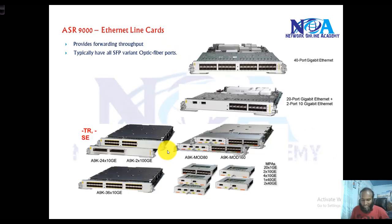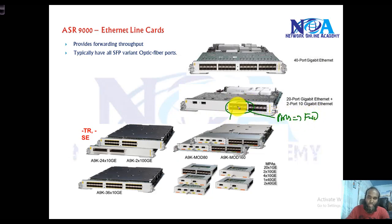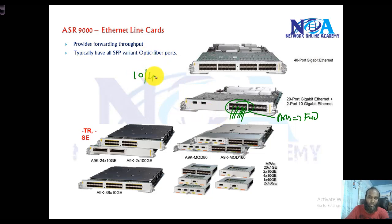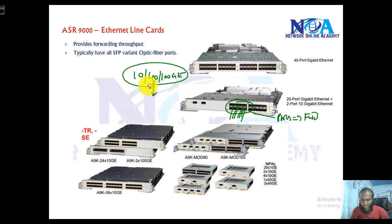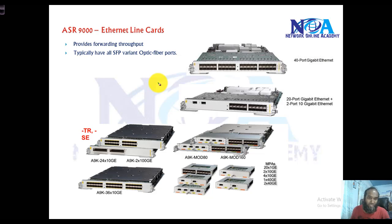Next are the ethernet line cards. These are the ports that do the actual forwarding — where you actually connect devices or customers. There are different models of ethernet line cards supported, mostly supporting up to 10 Gig, 40 Gig, and even 100 Gig ethernet ports on some platforms. You should check the Cisco website for the different models, specifications, and compatibility with specific Cisco ASR platforms.